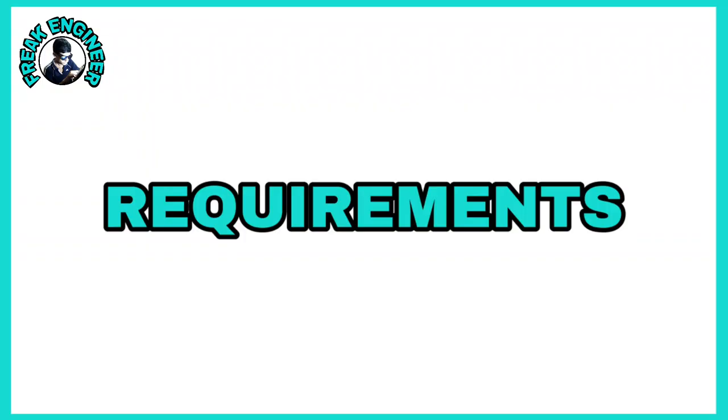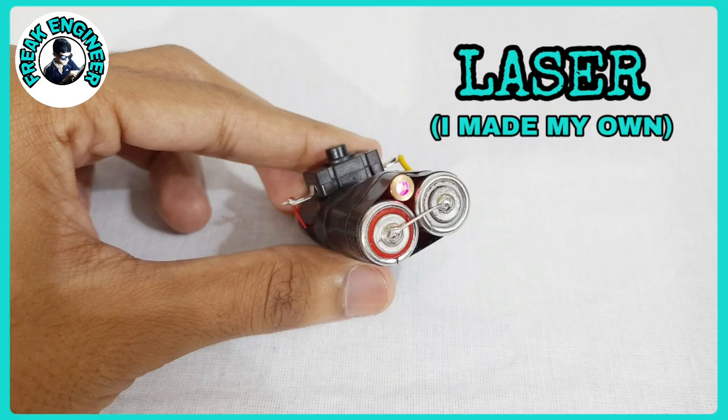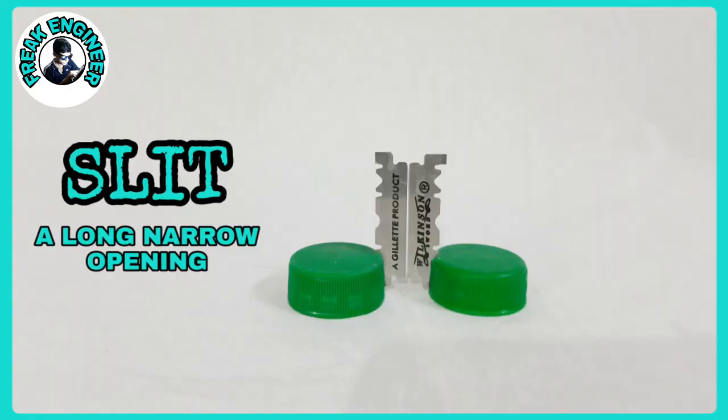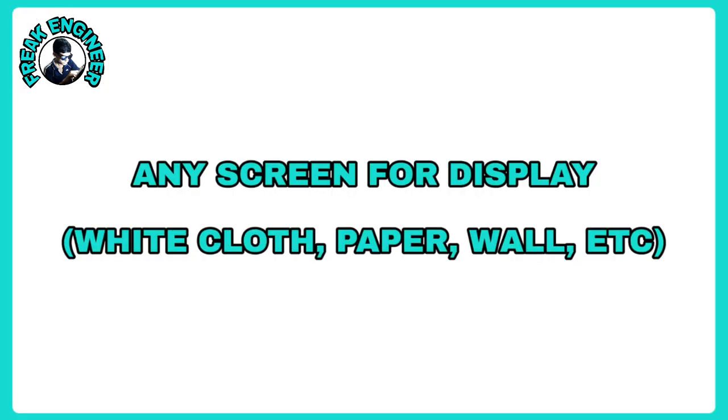In this experiment, light strikes the sharp corner of a slit and bends to form a pattern on the screen. For that, we need a monochromatic light source such as a laser. For making the slits, I have used steel blades fixed in a bottle cap for the base, and a screen.